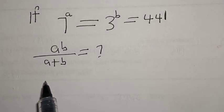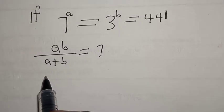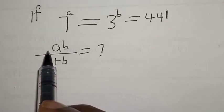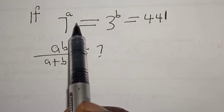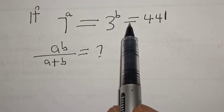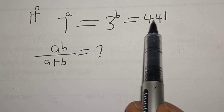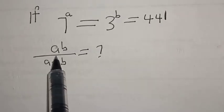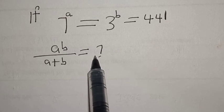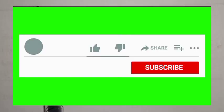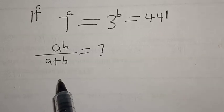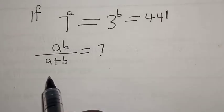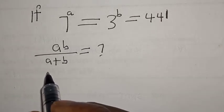Hi everyone, welcome to my class, the Holista class, where we teach mathematics and statistics. In today's class we want to look at how we can solve this equation: if 7 raised to power a is equal to 3 raised to power b is equal to 441, then ab over a plus b is equal to what? This question is a mathematics olympiad problem. Please don't forget to like, share, comment, and subscribe.